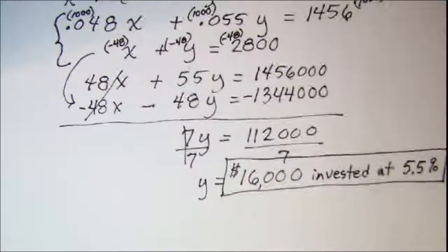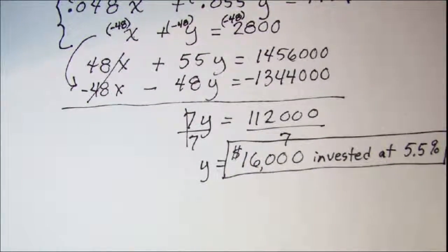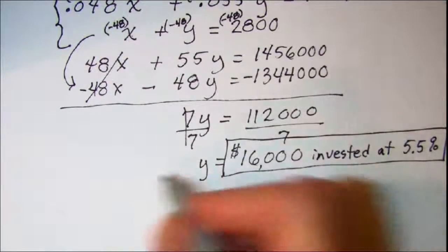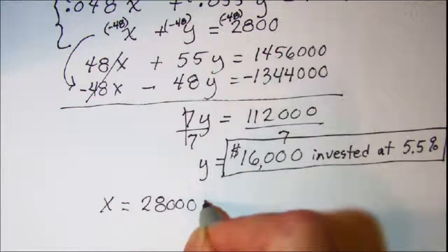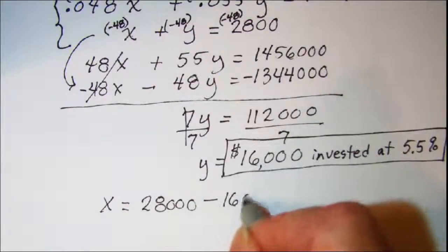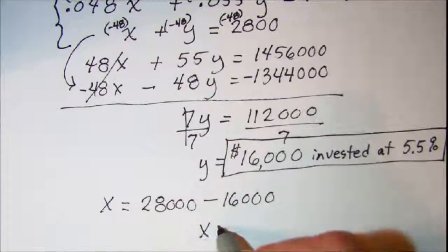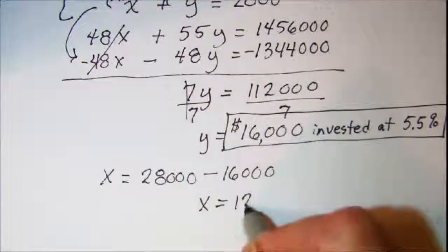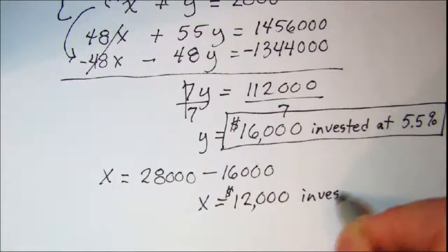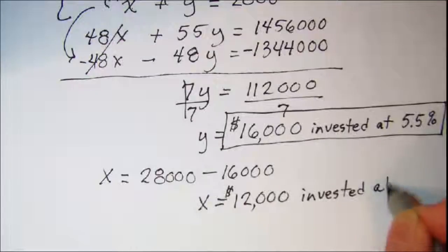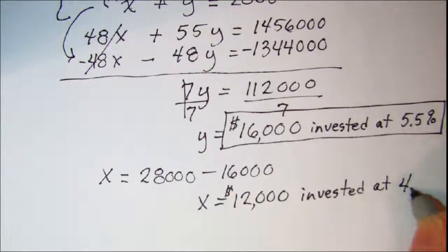And then the two investments totaled $28,000. So x is going to be $28,000 minus $16,000. So x equals $12,000. And that's the investment at 4.8%.